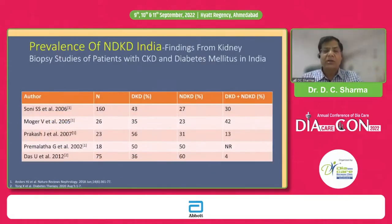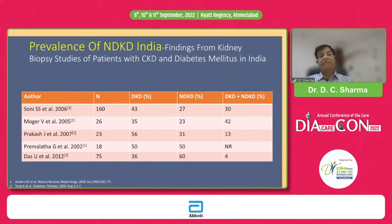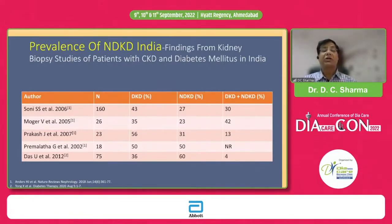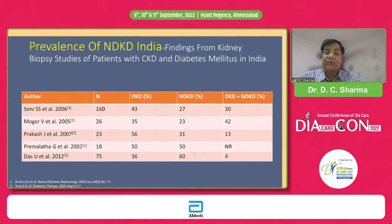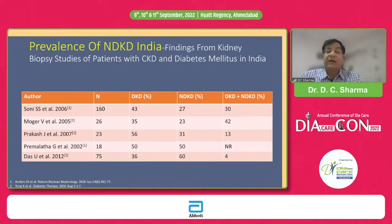Literature from worldwide shows that almost 30 to 40 percent of diabetic patients can have non-diabetic kidney disease. Indian studies based on biopsy-proven causes show that 25 to 60 percent of type 2 patients can have kidney disease not related to diabetic kidney disease, and about one-third of patients can have non-diabetic disease superimposed on a background of diabetic kidney disease. The prevalence of non-diabetic kidney disease in diabetic patients is therefore very high.